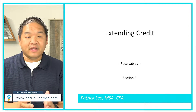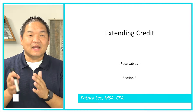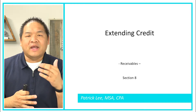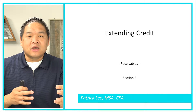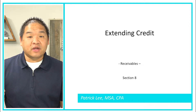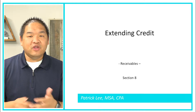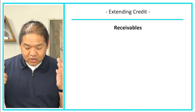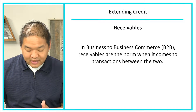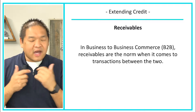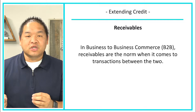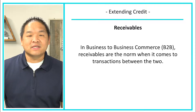In this lesson specifically, we are going to take a look at extending credit — what does that look like, why do we do that, and what are some issues with that extension of credit. So giving you an overview of receivables. Receivables in business-to-business commerce, or B2B, are kind of the norm when it comes to transactions between those two parties. It's always been like this.